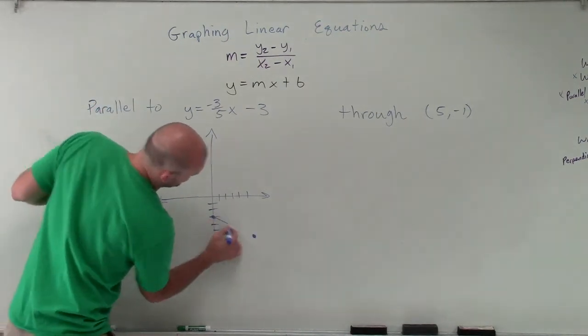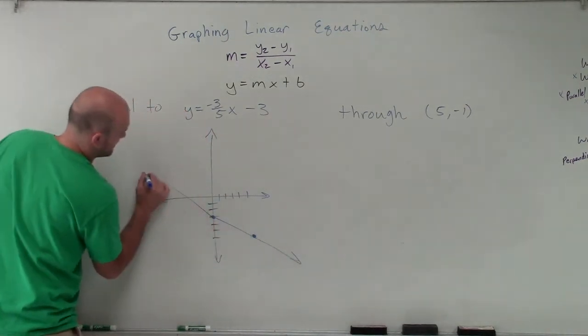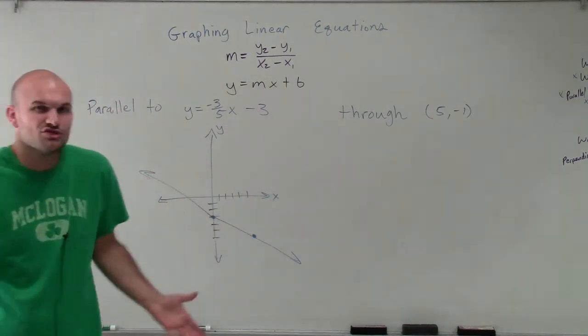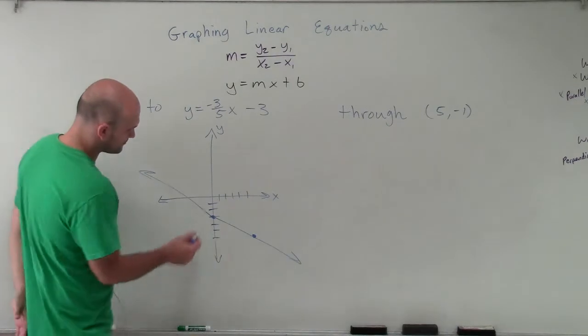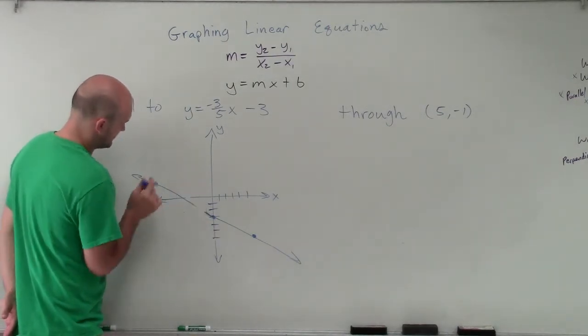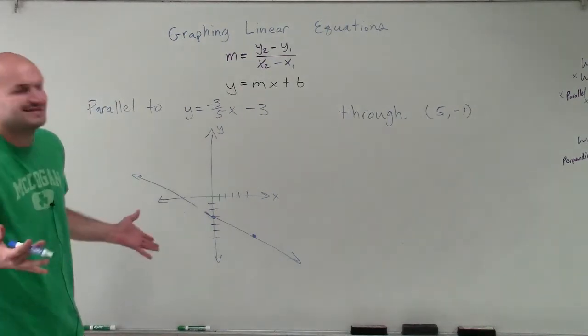So I have a line that looks something like this. It's not very exact. You can see here's the x-axis, here's the y-axis. But I'm just trying to get an idea of it, because that doesn't look very straight at all, does it? So we have something that's going to look something like that.